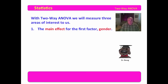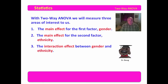With two-way ANOVA, we will measure three areas of interest. The first is the main effect for the first factor, gender — you're in fact conducting a simple one-way ANOVA based upon differences in gender. Next is the main effect for the second factor, ethnicity — again, a simple one-way ANOVA. But then we examine the interaction effect between gender and ethnicity upon the dependent variable, touching the fringes of simple multivariate statistics. Most things are affected by many independent variables; the limitation of two-way ANOVA is that we can only consider two at a time.